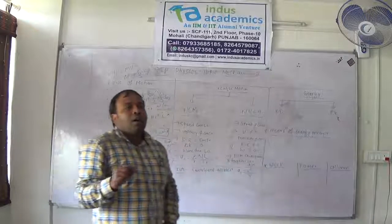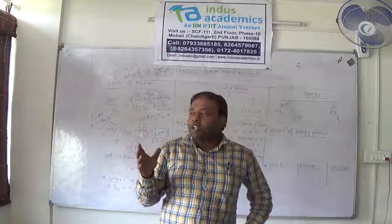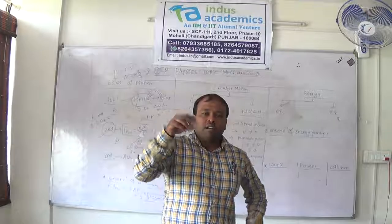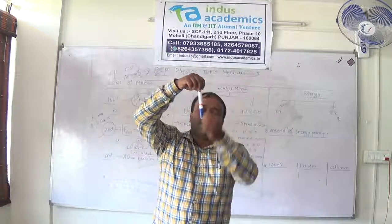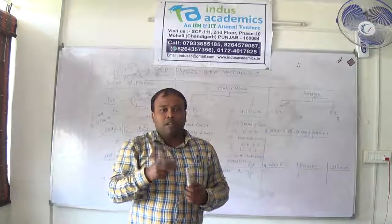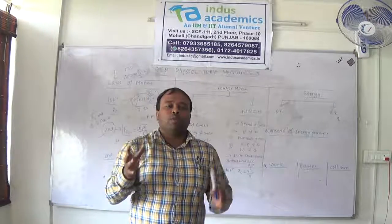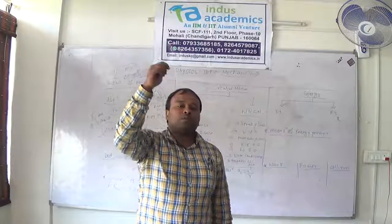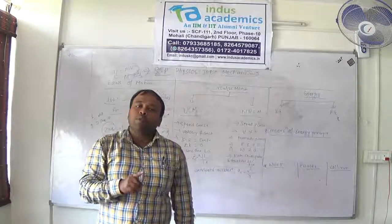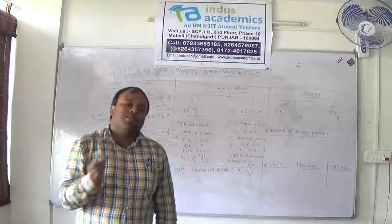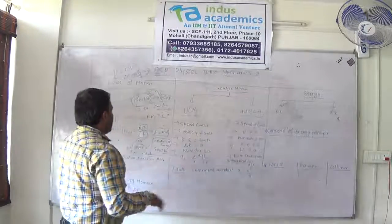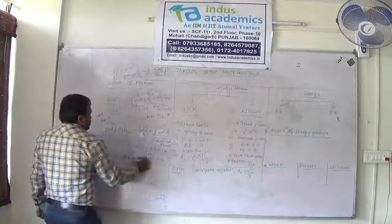One question asked in the CDS exam: what is the minimum number of forces required to keep a body in equilibrium? If only one force acts on a body — say, gravity Mg acts downward — the body will come down and can never be in equilibrium. So you need at least two forces. The minimum number of forces required to keep a body in equilibrium is 2.